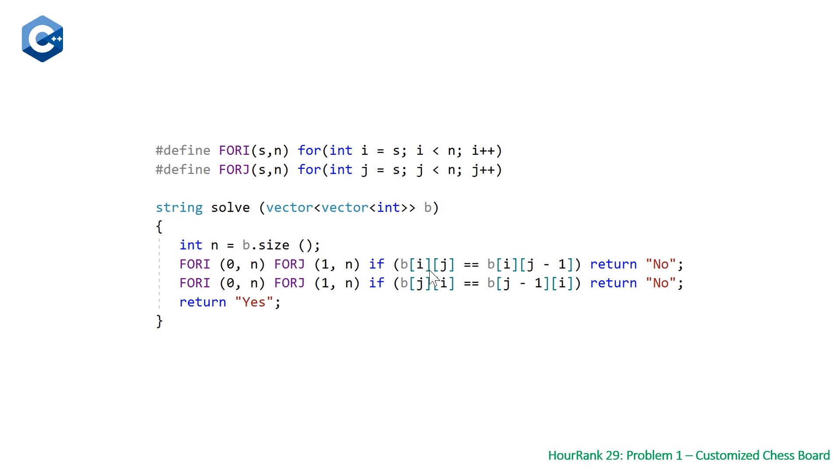The first one is the row major. And you can see here that we're just going from zero to n. And then on the inner loop, we're going from one to n. And that's because we're going to be looking at the element before the current element we're looking at. So we look at the element at i,j. And if that's equal to the element at i,j minus one, we know that we need to return no.